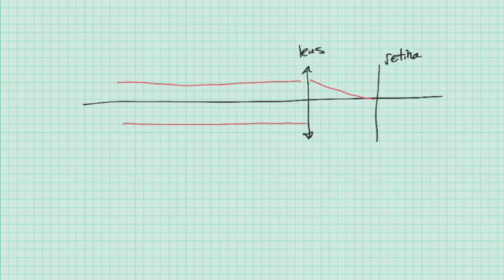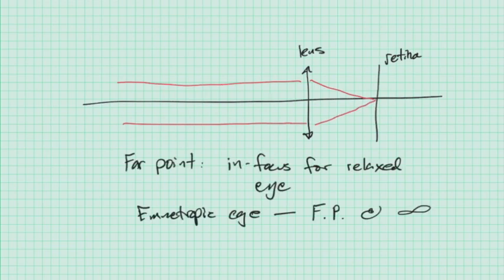If we have parallel light coming into this, it forms a clear image on the retina. We call that point the far point. It's the point where an object will be in focus for the relaxed eye. So for the emmetropic eye, the far point is at optical infinity.